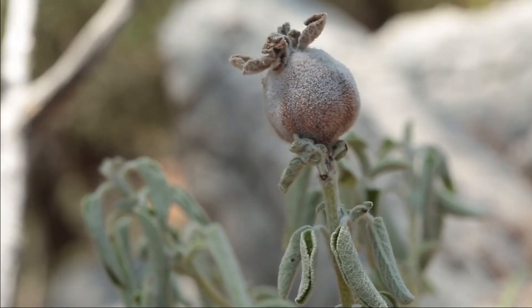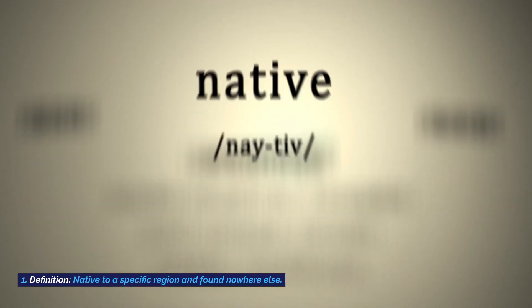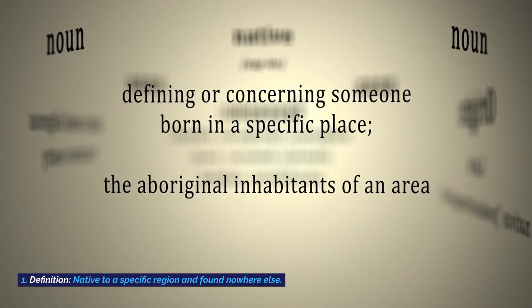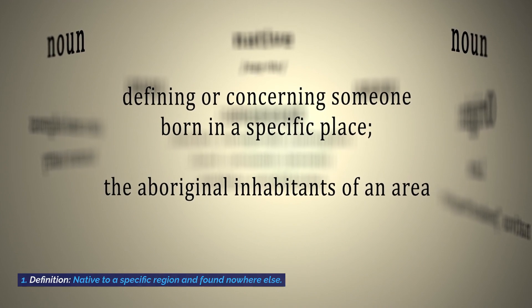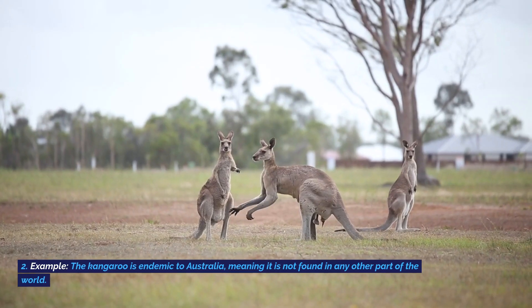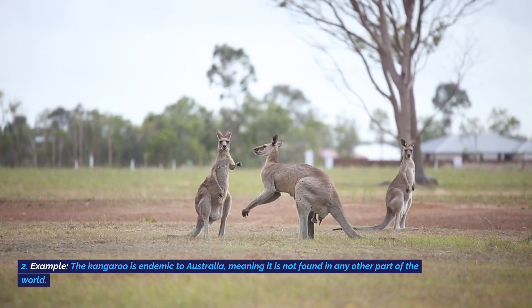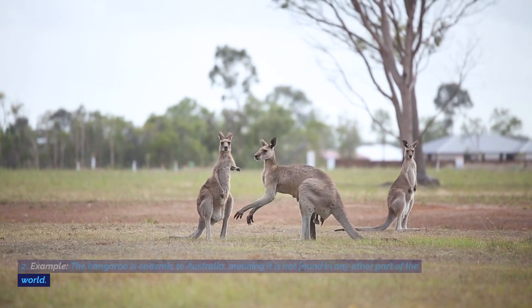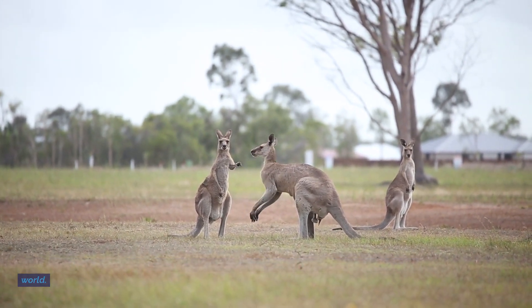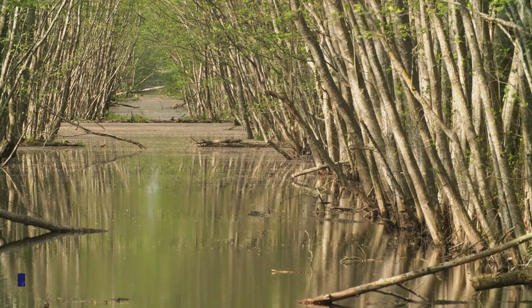Endemic: native to a specific region and found nowhere else. Example: The kangaroo is endemic to Australia, meaning it is not found in any other part of the world.